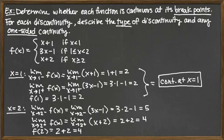Now assessing what we have: the left-hand limit is 5, and both the right-hand limit and function value are 4. They're not all the same, which tells us there is a discontinuity at x equals 2. Since it's discontinuous, we now need to identify the type of discontinuity and any one-sided continuity.